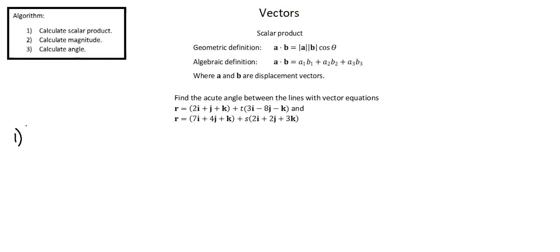To calculate the scalar product, we'll use the algebraic definition, which is the sum of three products. We're working with the direction vectors of the line equations. The x component of the first direction vector is 3, multiplied by the x component of the second, which is 2. Adding the product of the y components, negative 8 and 2, and the product of the z components, negative 1 and 3. Simplifying, we arrive at a value of negative 13.